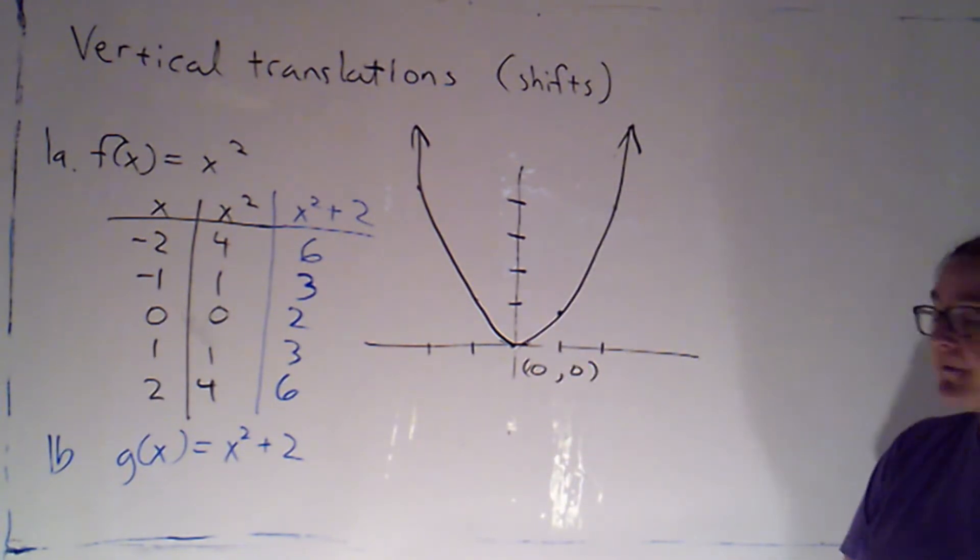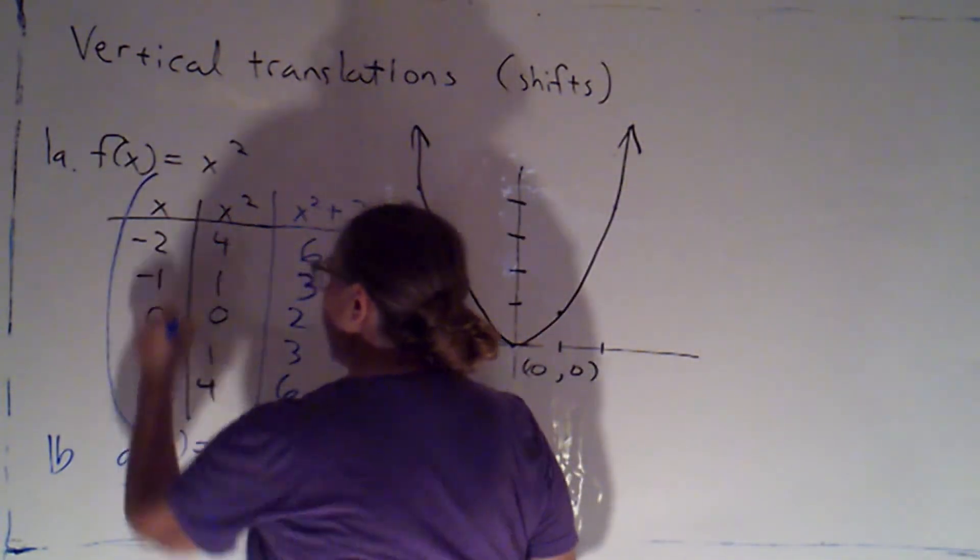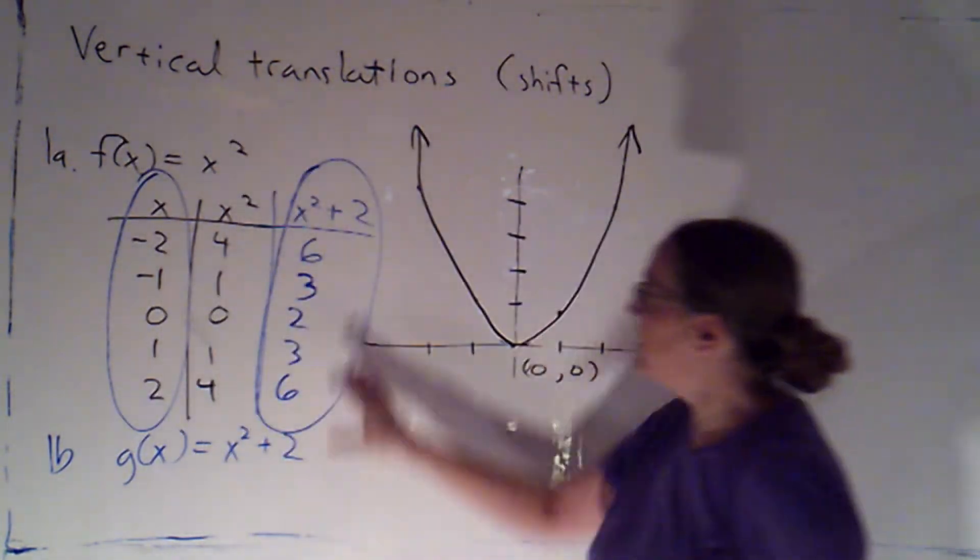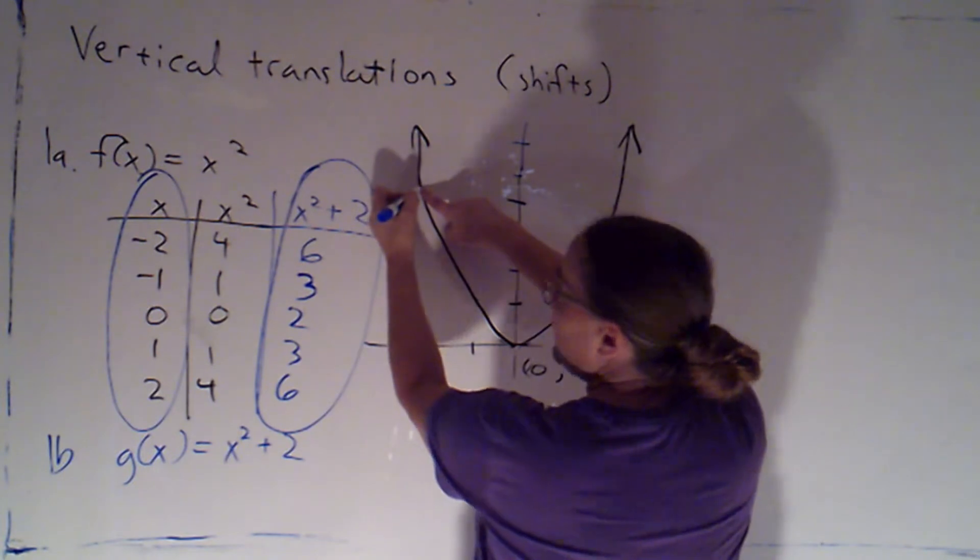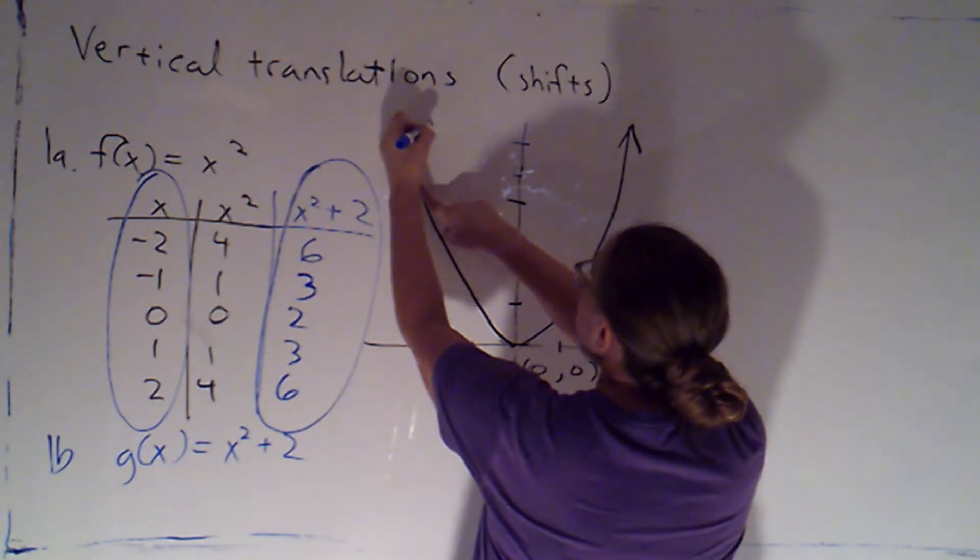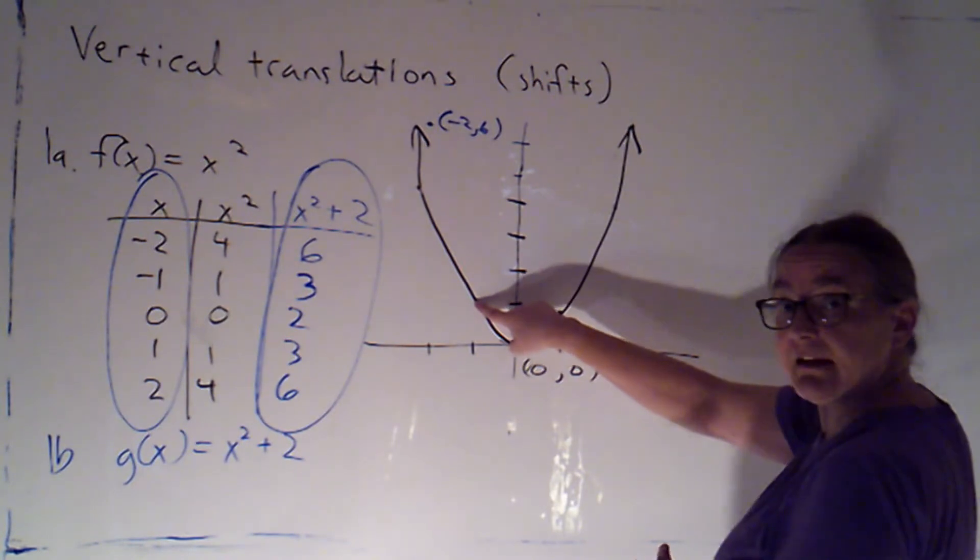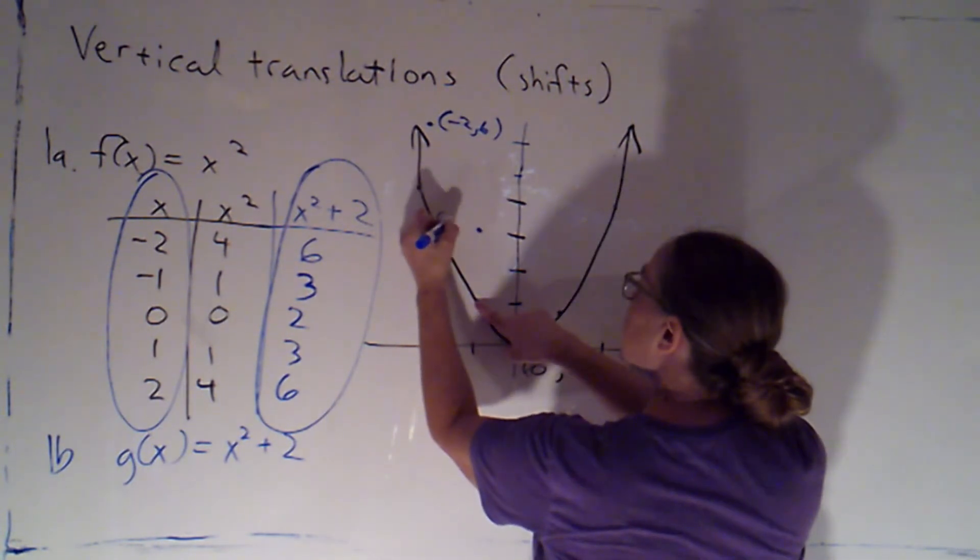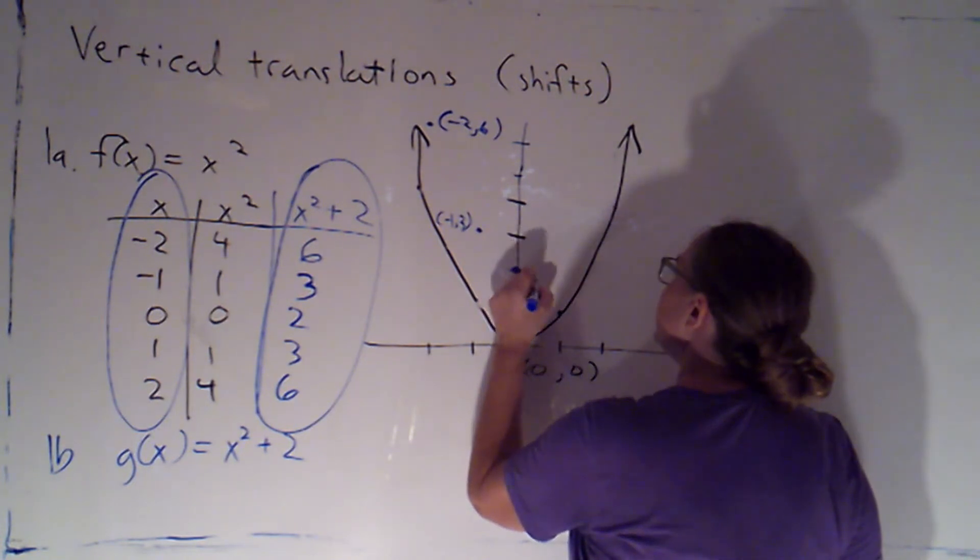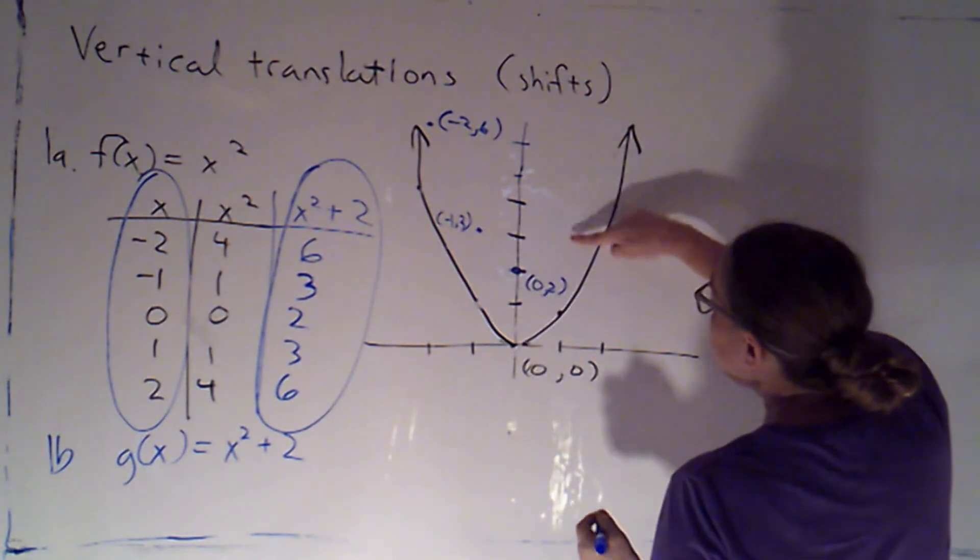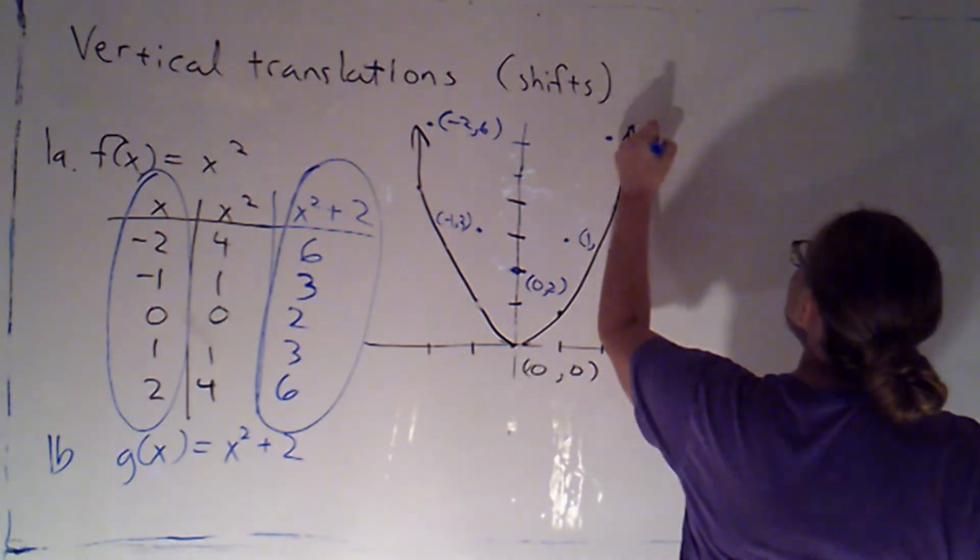When I'm graphing this function, this middle column was just a helper column. I'm really just graphing x and then the y values for g(x) in this third column. So I'm going to have the point (-2, 6). On the parent graph, I had (-2, 4). Adding 2 to the y value gives me (-2, 6). I'm going to do that for each of these points. Here I have (-1, 1). Adding 2 to the y value gives me (-1, 3). The vertex was at (0, 0). Adding 2 to the y value gives me (0, 2). The point (1, 1) gets lifted up to a new height at (1, 3). And (2, 4) gets lifted up to a new height at (2, 6).